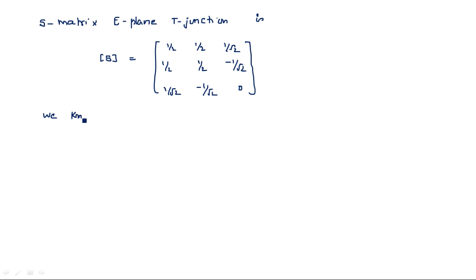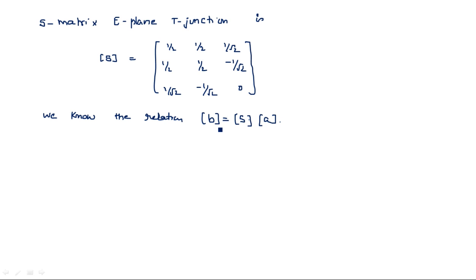Now we know the relation: B is equal to S times A. Written in matrix form, it is B = S·A. The E-plane T-junction has 3 ports, so we have B1, B2, B3 and A1, A2, A3. We can write B1, B2, B3 as a column matrix equal to S, where S is already known for this E-plane T-junction.